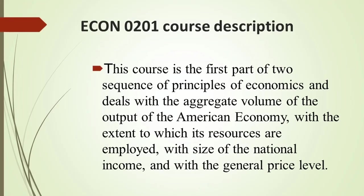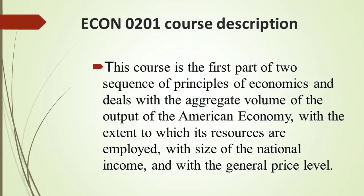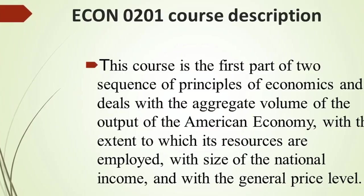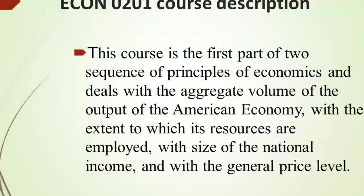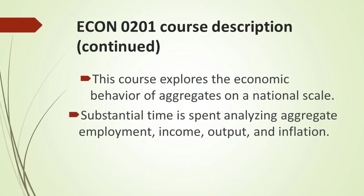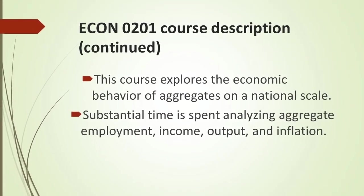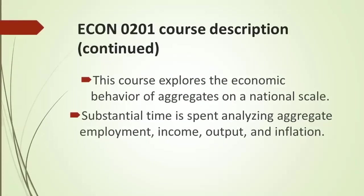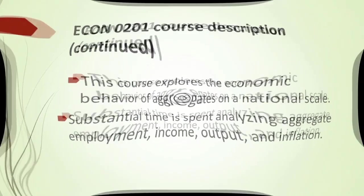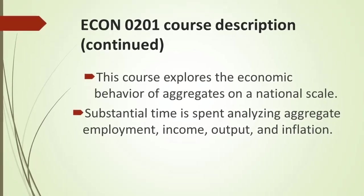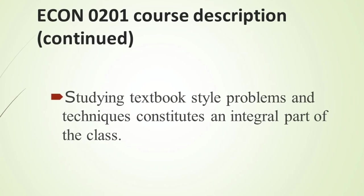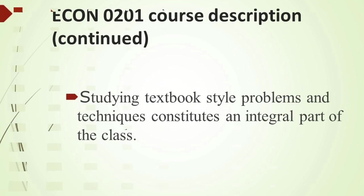Econ 0201 Course Description: This course is the first part of a two-sequence of principles of economics and deals with the aggregate volume of the output of the American economy, with the extent to which its resources are employed, with the size of the national income, and with the general price level. This course explores the economic behavior of aggregates on a national scale. Substantial time is spent analyzing aggregate employment, income, output, and inflation. Studying textbook-style problems and techniques constitutes an integral part of the class.